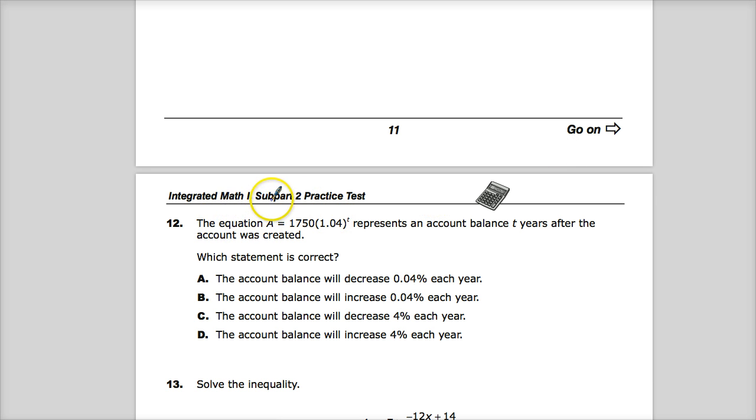The equation, this is an exponential function. A equals 1750 times 1.04 raised to the t-power represents an account balance t-years after the account was created. And they want to know which statement is true. They want to know, will the account balance increase or decrease, and by how much.